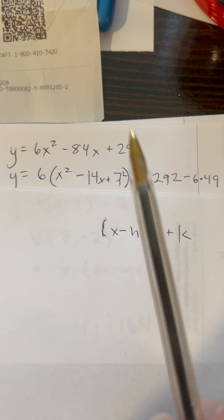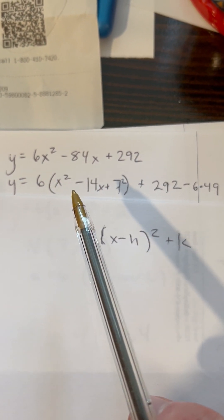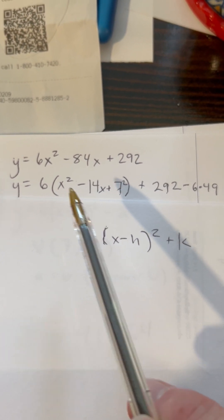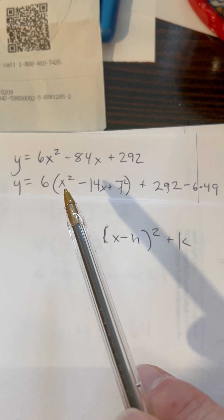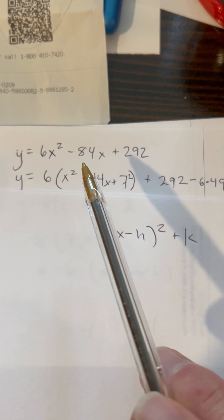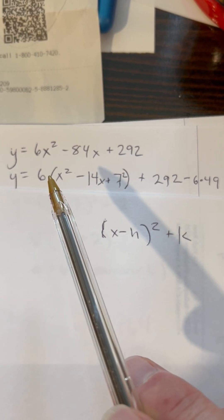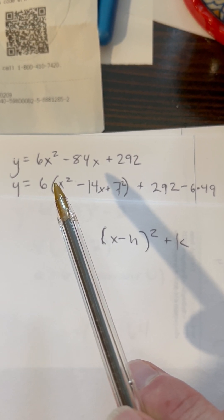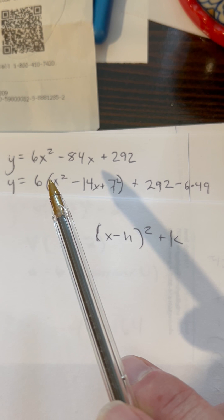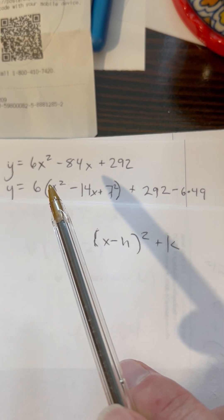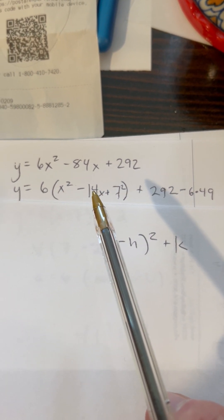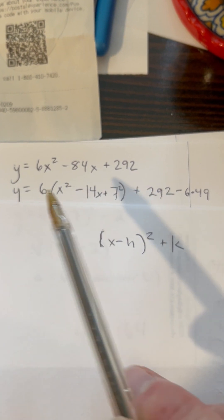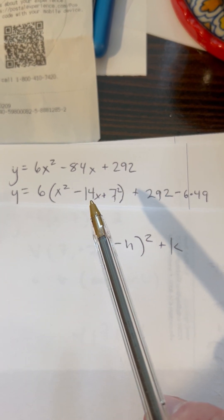So I pulled out a 6 out of the first term and the second term. And here I'm left with x², right? Distributive property. 84 divided by 6. Well, 72 divided by 6 is 12, and 84 is two more 6s after that, right? 72 plus 12, so that's 14. I've got a negative, so I pulled out a 6. I'm left with a negative 14x here.